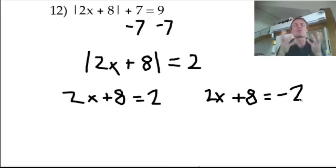And 2x plus 8 also equals negative 2. Remember you can now have the negative. You've got rid of all the absolute rules. Remember you can't absolute anything to a negative, but now I've got rid of the absolutes. It's just one's positive 2, one's negative 2.